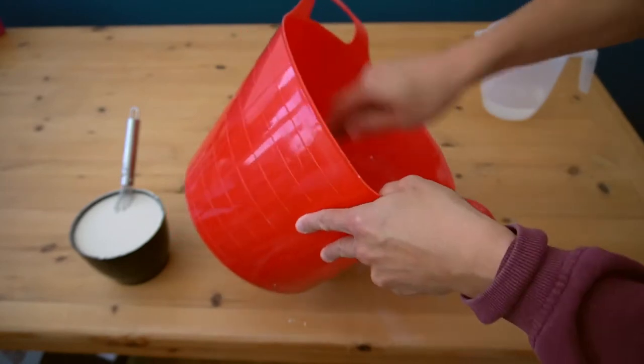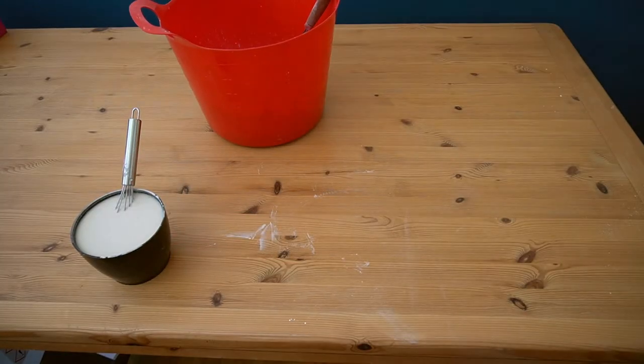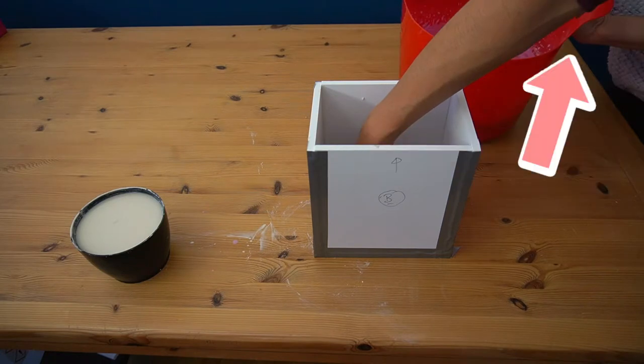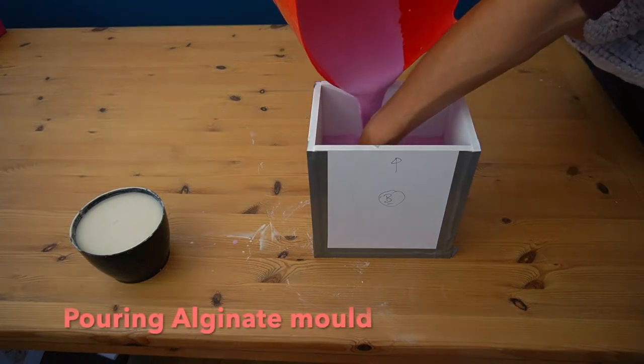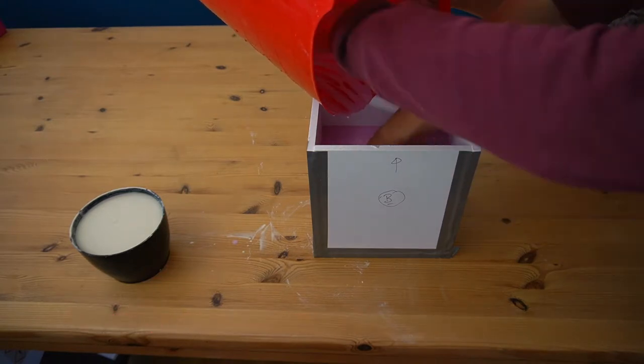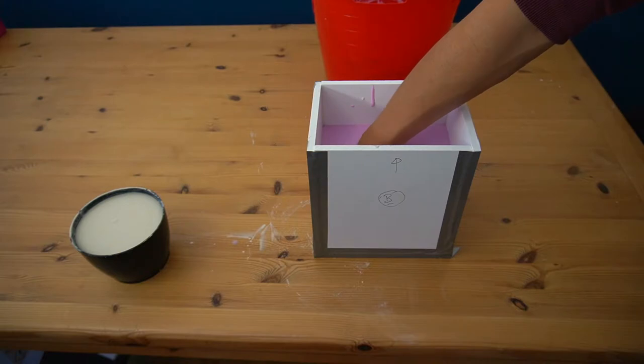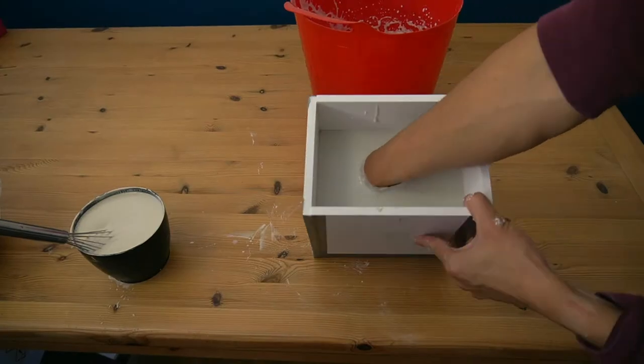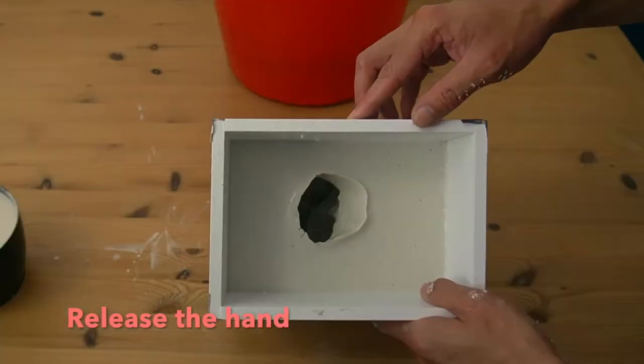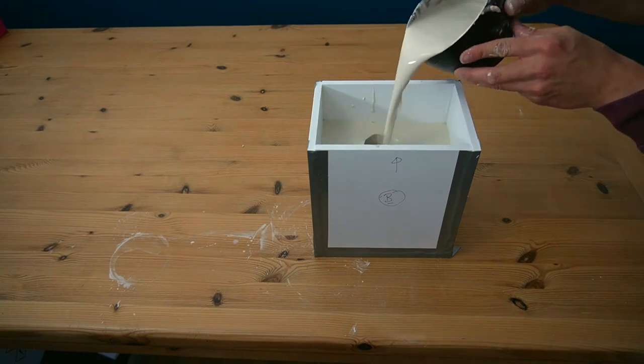Now time to pour the mold. Carefully hold still and don't move. Make sure you don't touch the sides of the box. After three minutes, the alginate is set. Once the hand is carefully removed, we can cast the plaster.